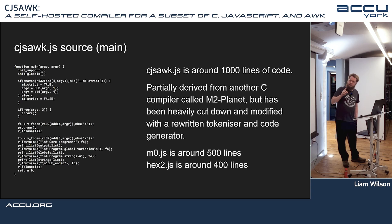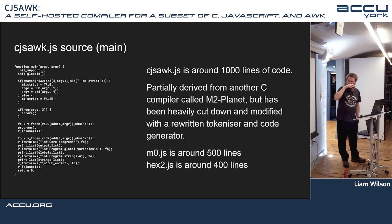Digging through the source code: the compiler itself is around 1,000 lines of code. It's partially derived from another C compiler called M2Planet, but has been heavily cut down and modified with a rewritten tokenizer and code generator. The macro assembler is about 500 lines, and the linker is about 400 lines of code.